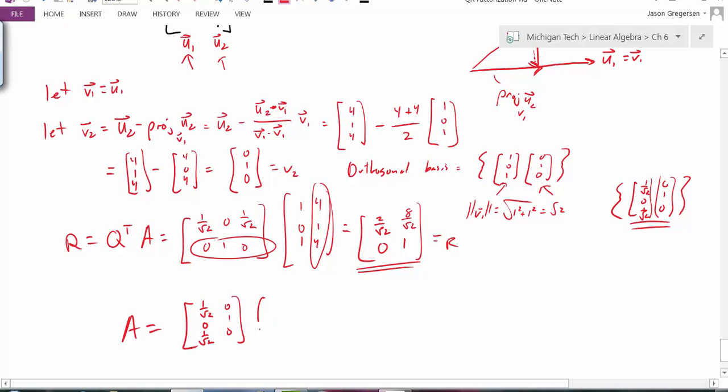Times the matrix R, 2 over root 2, 8 over root 2, 0 and 1. And this is my QR factorization.